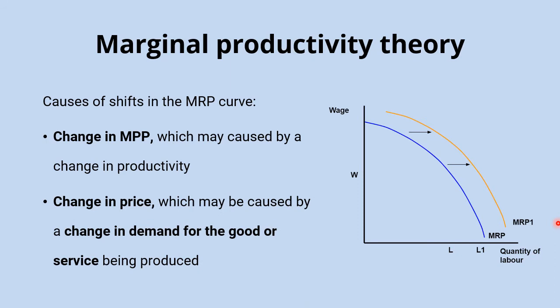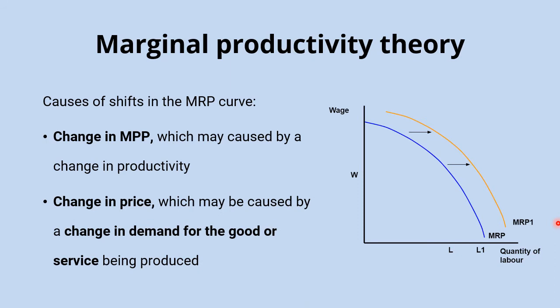It's worth noting that the opposite will be the case — there will be a left shift of the MRP curve if there was a decrease in productivity. The other factor, based on the fact that MRP equals MPP times marginal revenue, is that a change in the price of the product being sold will change the additional revenue from the sale of that product, therefore changing the marginal revenue. So that will cause the MRP curve to shift as well. For example, an increase in demand for the product these workers are producing would increase the price, increase MRP, and shift the demand for labour curve to the right. A decrease in product price would cause a left shift.